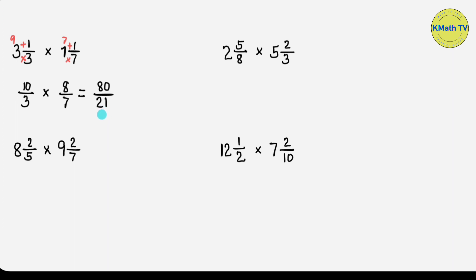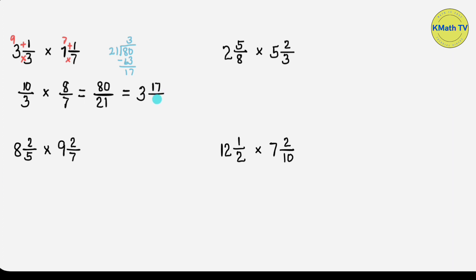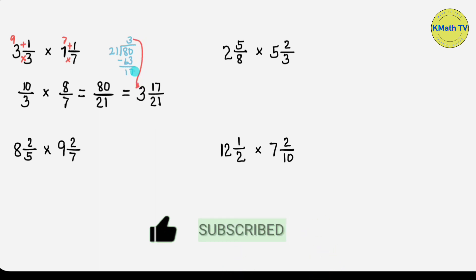This fraction is an improper fraction — the numerator is greater than the denominator. So we need to simplify it by dividing the numerator by the denominator. If we divide 80 by 21, the quotient is 3 and the remainder is 17. Since there is a remainder, we write the answer as a mixed number: the quotient 3 is the whole number, the remainder 17 is the numerator, and the divisor 21 is the denominator. The answer is 3 and 17/21.